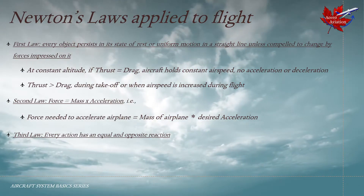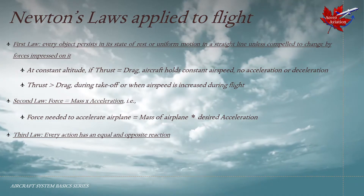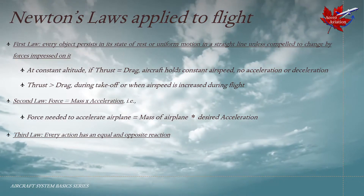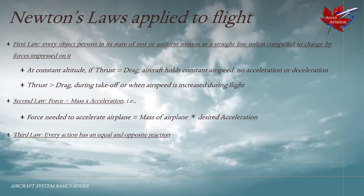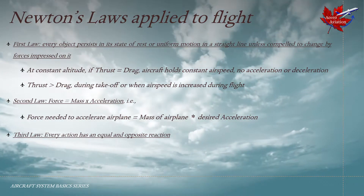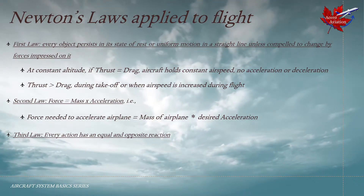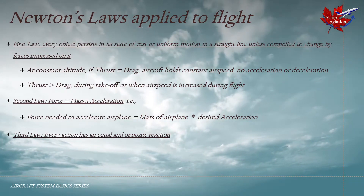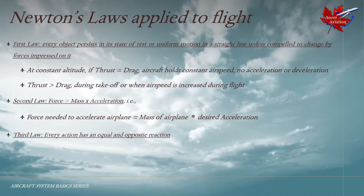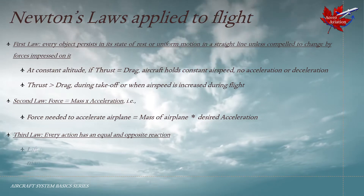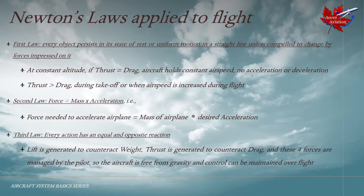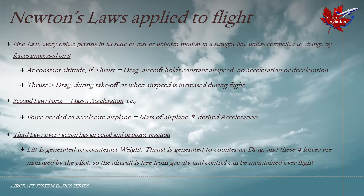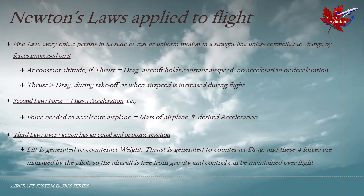Both lift and thrust can be explained by the third law. Considering generation of lift by the wing of the airplane, the air moving past the wing is deflected downward by the shape and motion of the wing. The wing exerts a force or action on the air, and in reaction it is pushed upward by the air, which is lift. As for thrust, when the engine pushes a mass of air towards the rear of the aircraft, the equal and opposite reaction is what propels the aircraft forward, which is what we call thrust. So lift is generated to counteract weight, thrust is generated to counteract drag, and these four forces are managed by the pilot so the aircraft is free from gravity and control can be maintained over flight.